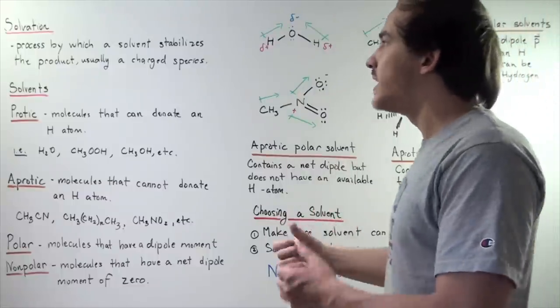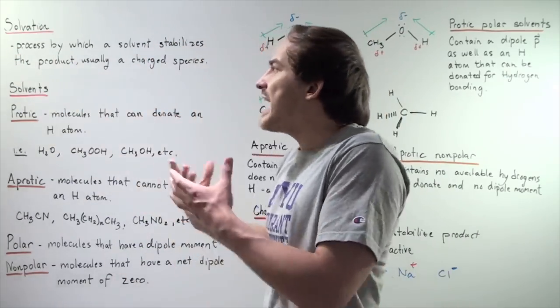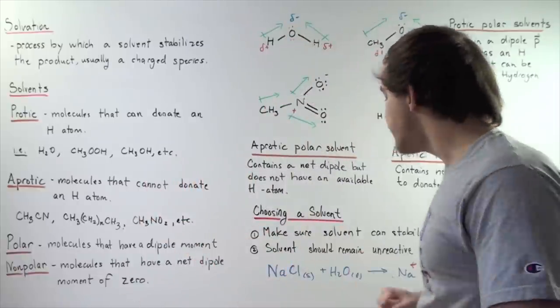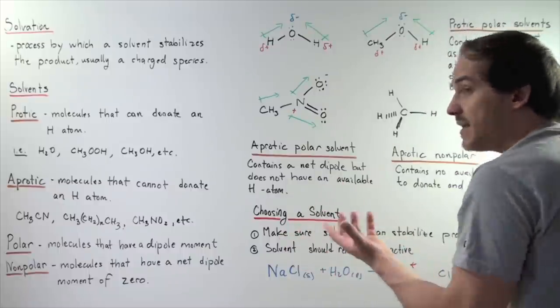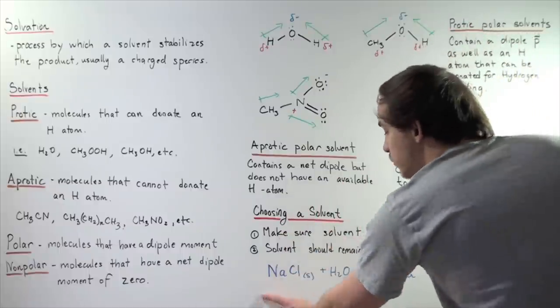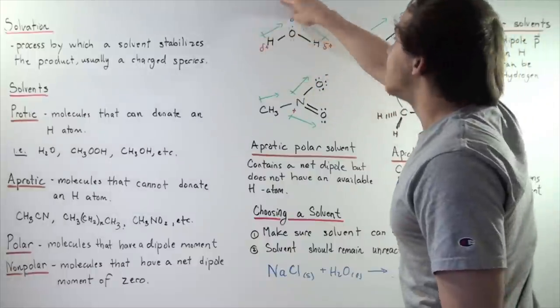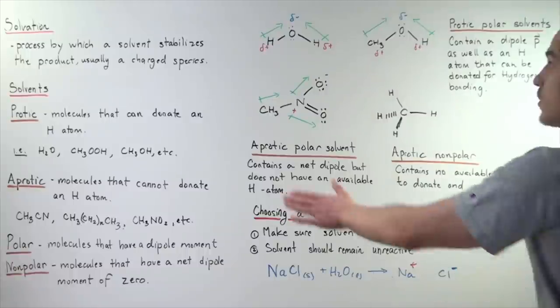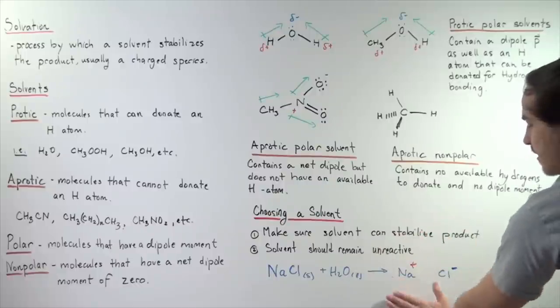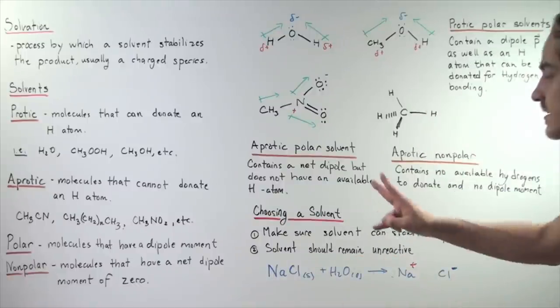Remember, the entire point of solvation is for the solvent to stabilize the product so that our reaction is more product favored. For example, if sodium chloride, a solid, is placed into water, a beaker of water, that sodium chloride will dissociate into its two ion forms and the water molecules will hydrogen bond. They will donate the H atoms to these positive and negative charges. So, the water molecule will stabilize this product and that's exactly why this reaction will be product favored.